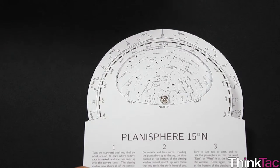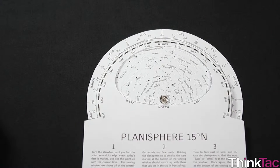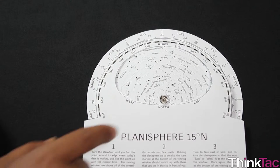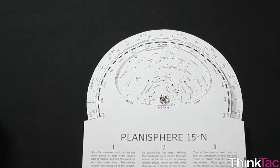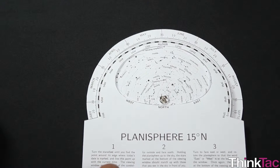The Planisphere is a very interesting tool that you can use. It's useful to look at the night sky because you can change the time and the month at your leisure and figure out what stars are visible at what time of the year.